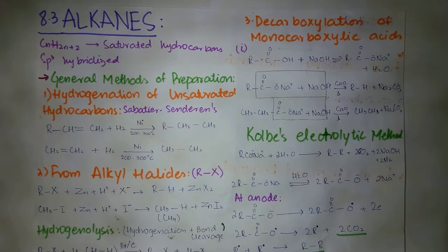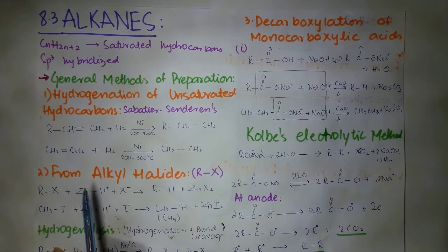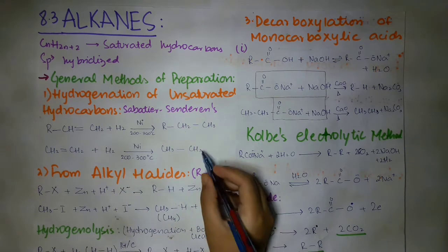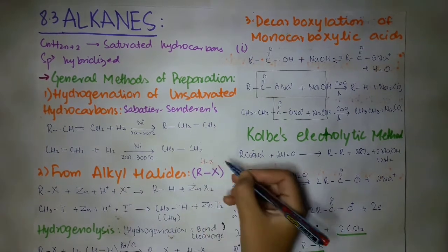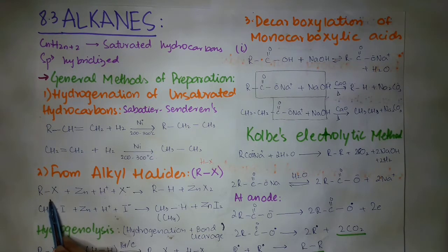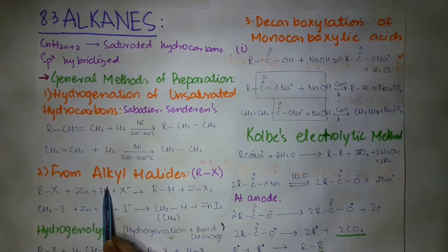The second method is from alkyl halides. We can convert alkyl halides into alkanes in the presence of two things: zinc and mineral acid. Alkyl halide is treated with zinc and mineral acid. Mineral acid is basically an acid dissolved in water, such as HX — where X is any halogen like fluoride, chloride, or iodide. When dissolved in water, it breaks into two ions: H⁺ and X⁻. The R–X bond cleaves and forms R–H, while the zinc combines with X to form ZnX2.